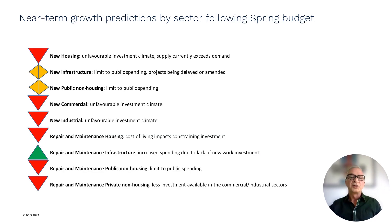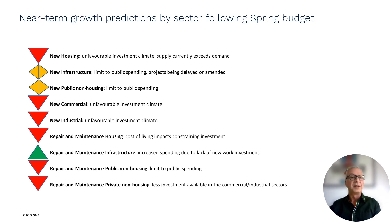Looking at short-term predictions following the spring budget, our predictions for the next 12 to 18 months for sector output are that essentially only one sector will continue to grow — infrastructure repair and maintenance — which is likely to benefit from increased spending due to a lack of new work investment. All other sectors we expect to either stagnate or decline.